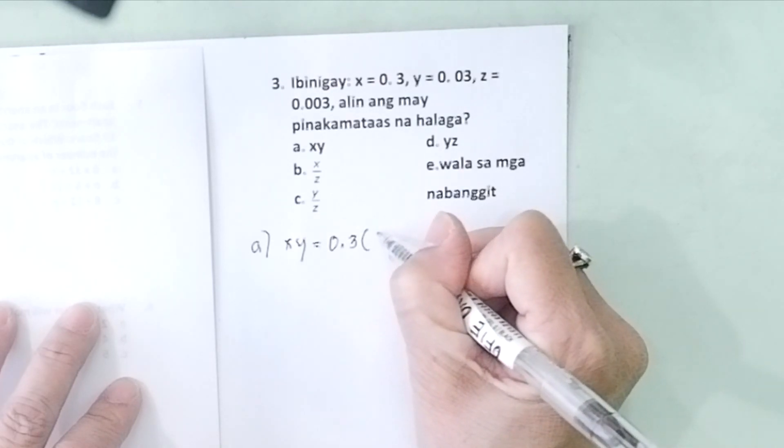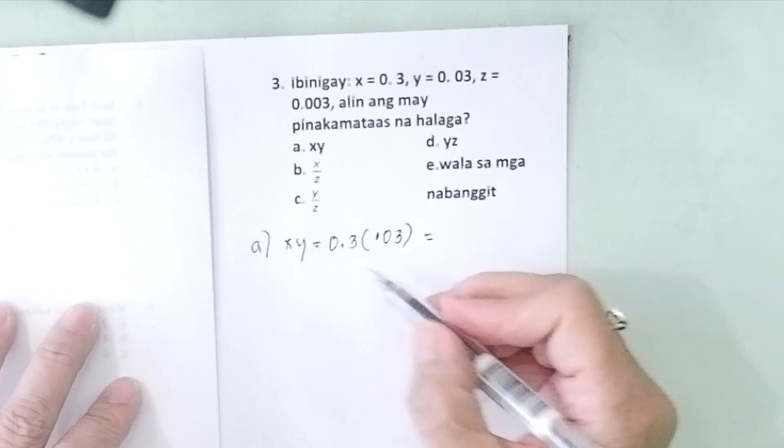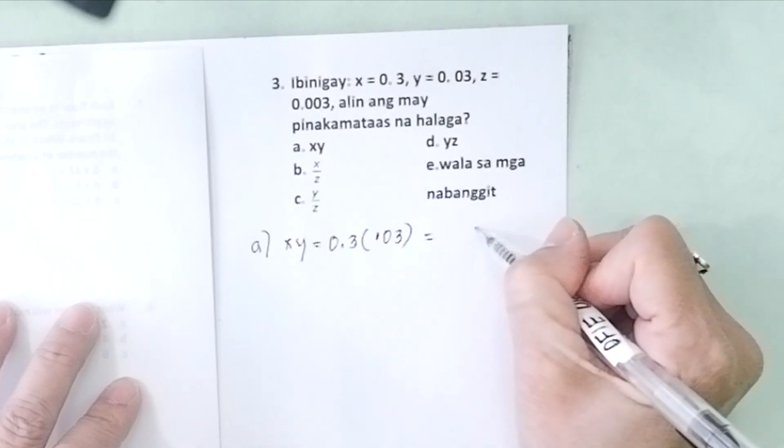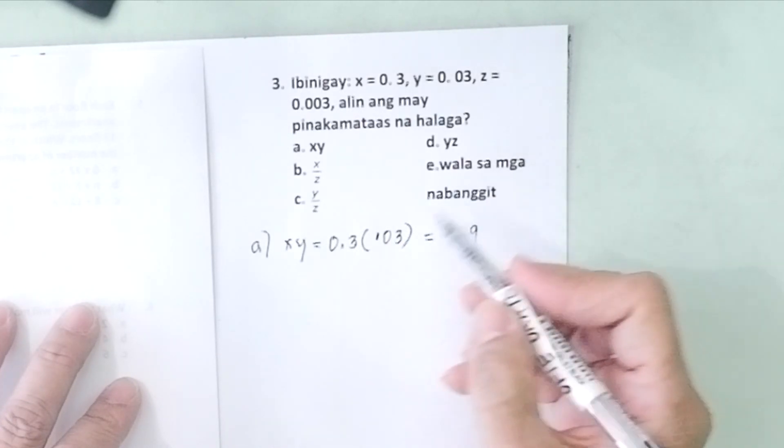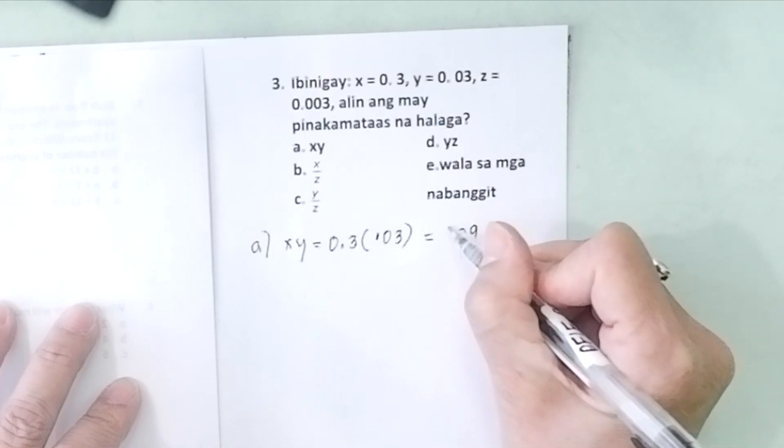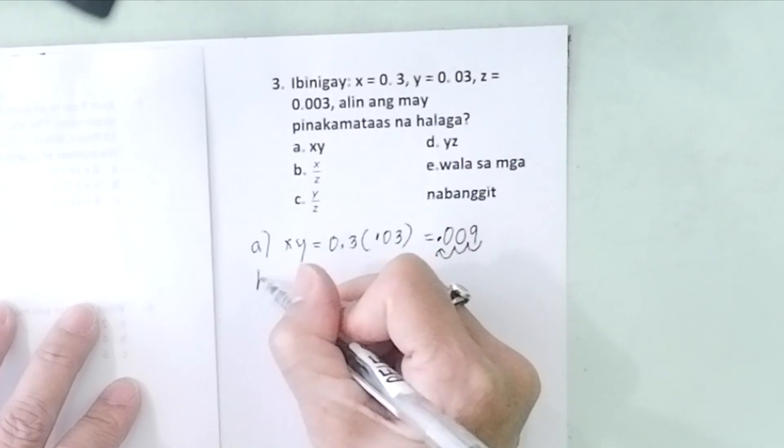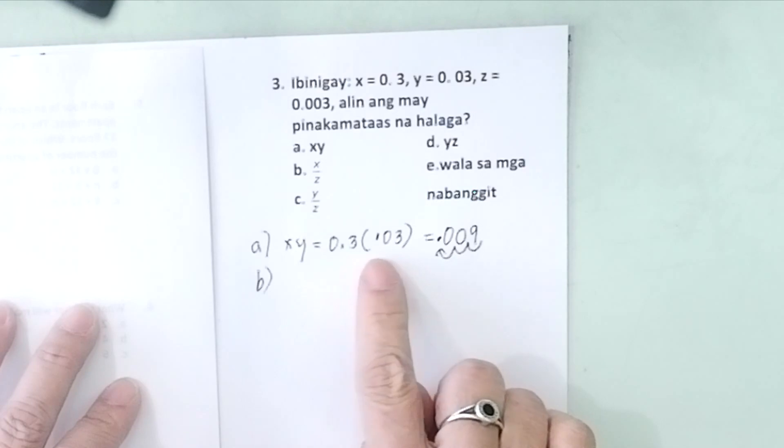So letter A, you will multiply x times y: 0.3 times 0.03. You take a shortcut: 3 times 3 is 9. Count the number of decimal places: 1, 2, 3; 1, 2, 3. 0.009. So you observe that when you're multiplying decimals, the answer is small, it becomes small.